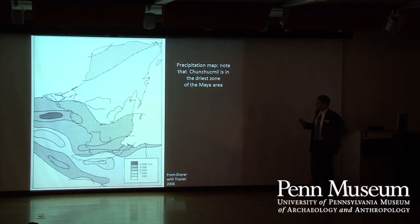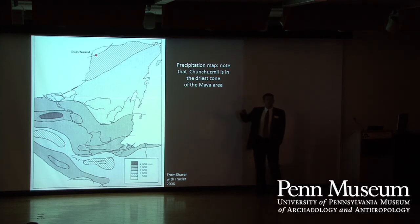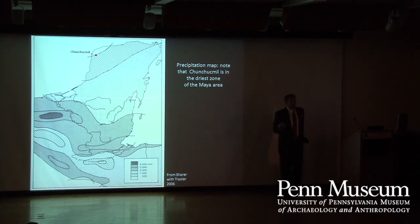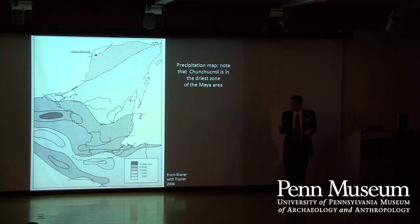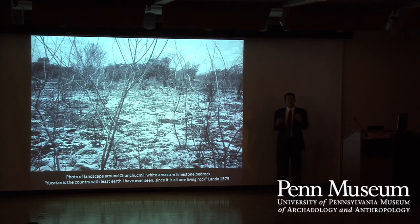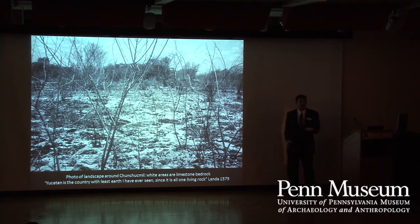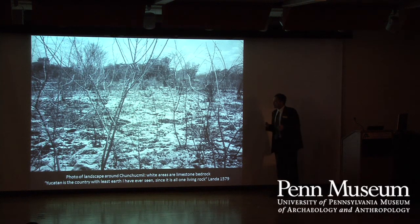Chuchuchmiel is located in the part of the Maya region with the least amount of rainfall. The site was first documented in the 1970s by the Archaeological Atlas of Yucatan, and there were rumors it was a pretty big site. We wondered how a seemingly big site could support itself in an area of very little rainfall, and where Chuchuchmiel is located there's very little soil — about a third of the land surface is bedrock. This set up research questions: just how big was Chuchuchmiel? How did it support itself? How did it get along politically with better-known sites like Uxmal?